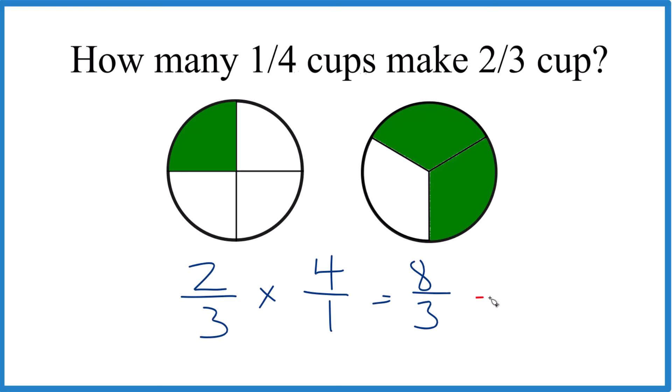That's hard to think about. We could change it to a mixed number. Three goes into eight, two times three, that's six with two left over.